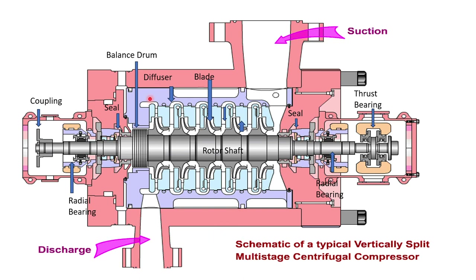Here we can see the different components of a vertically split compressor: the rotor shaft, blades, diffuser, coupling, radial bearing, shaft seal, balance drum, shaft seal on the other end, radial bearing, and thrust bearing. The suction and discharge ports of the compressor are also visible.